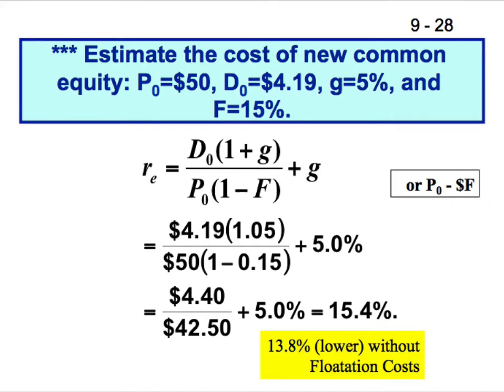Now let's estimate the cost of new common equity that has flotation costs. There's just one change in the denominator compared to the classic dividend discount model. Your cost of equity is D1 divided by an adjustment to the price — then add the growth rate.